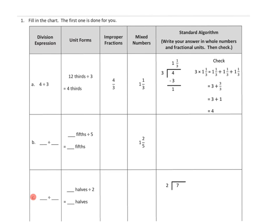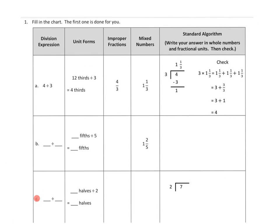It looks like we've got to express our result here in a variety of forms. We have to use the division expression, four divided by three. We have to use the unit form expression, 12 thirds divided by three. They've got an improper fraction, so that's four thirds. The numerator is greater than the denominator, so that's an improper fraction.